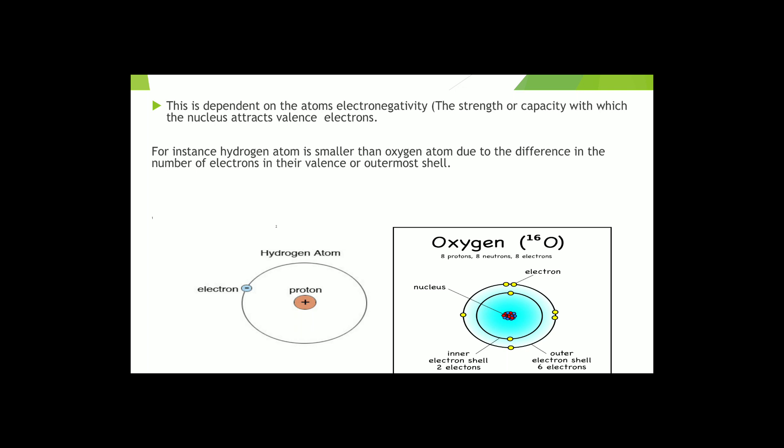So oxygen atom would be more capable of attracting the valence shell electron of hydrogen atom, which is more likely to get positive charge during the electronegativity.